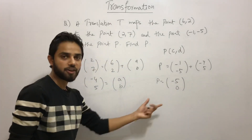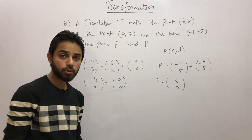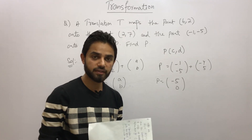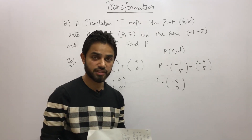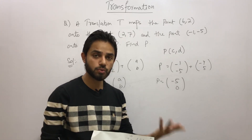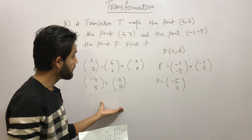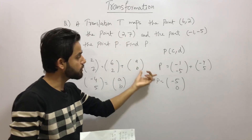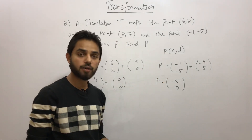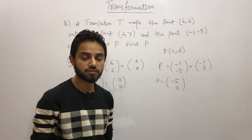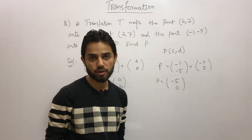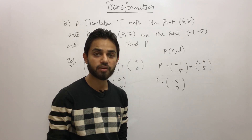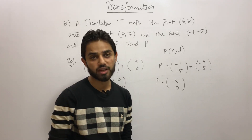In both examples: in the first, we were given the coordinates and the translation and found the new coordinates; in the second, we were given the original and new points and found the translation applied. I hope your concept of translation, the first topic of transformation, is now quite clear. If you enjoyed this video, please subscribe to my channel and share this video with as many students as you can. Thank you.